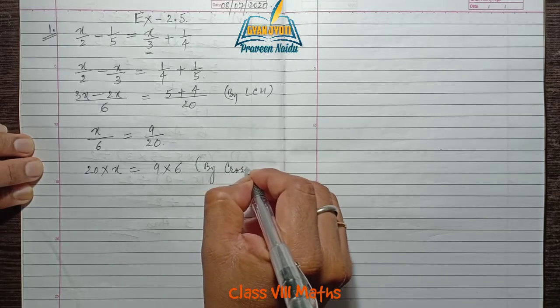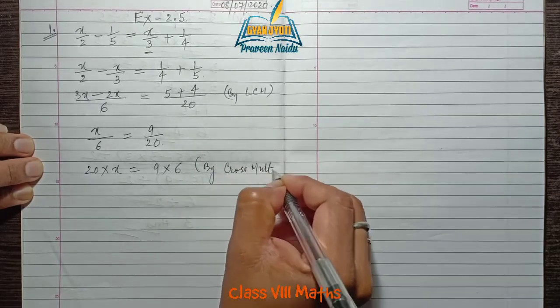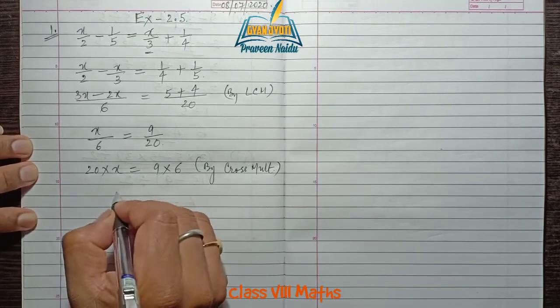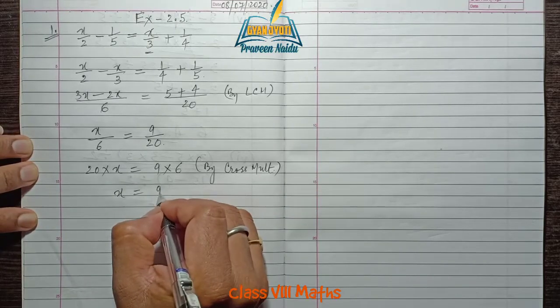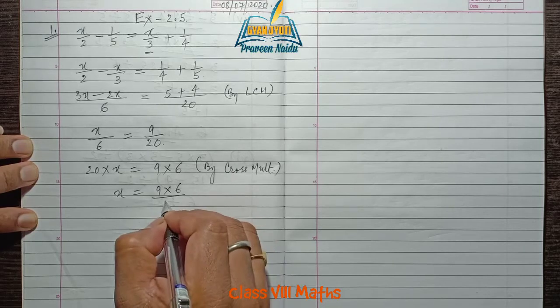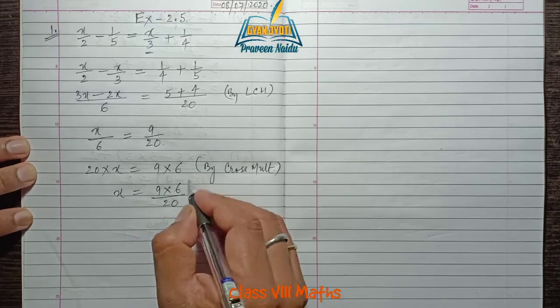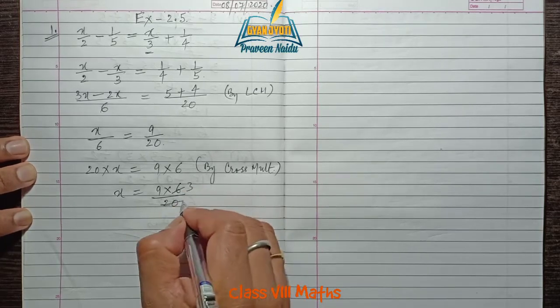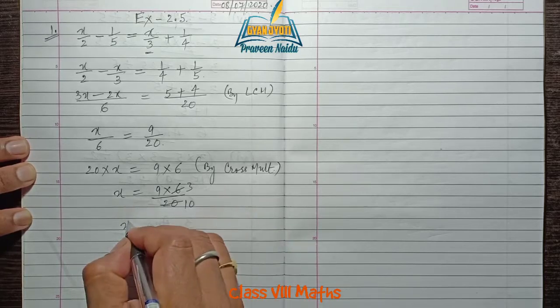By transposing 20 to the right side, we get (9 × 6)/20. By cancelling,